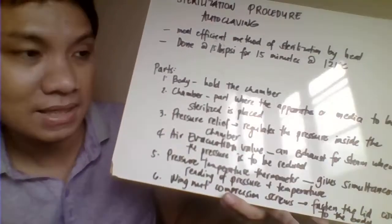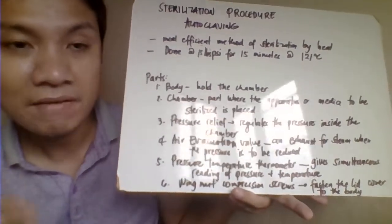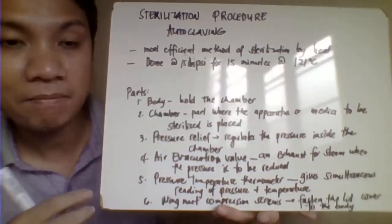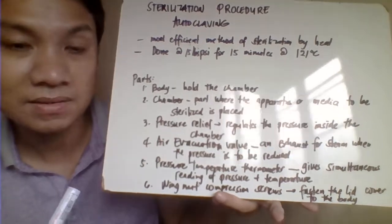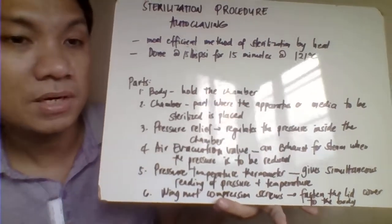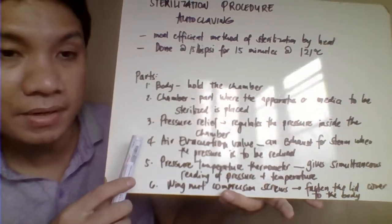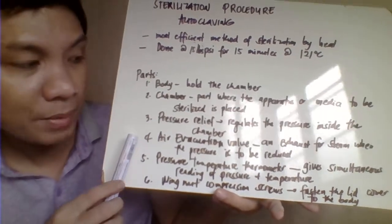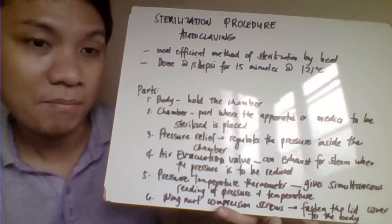The chamber is where we place our materials to be sterilized. In our autoclave in the medical simulation lab, your chamber is like a metal box where you put your materials to be sterilized. We also have the pressure relief, which regulates the pressure within our chamber to keep it within the required level.